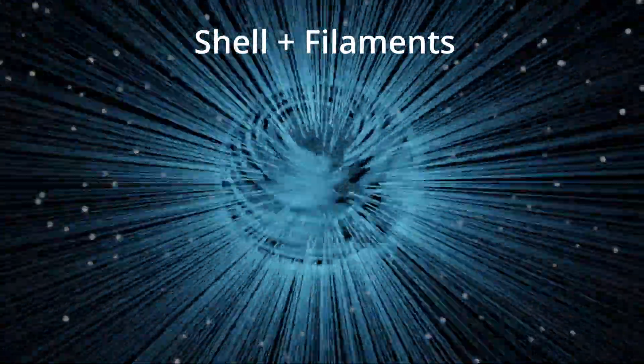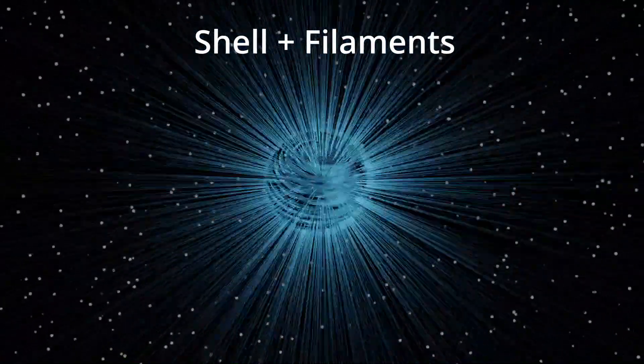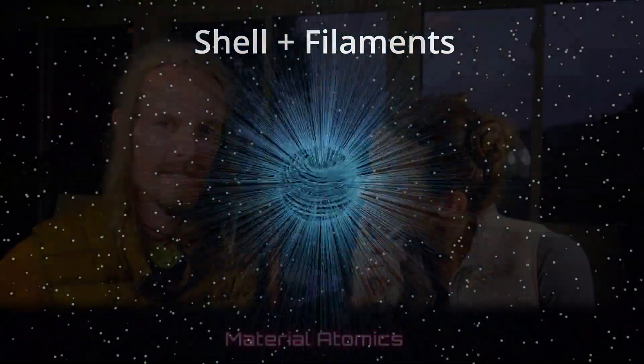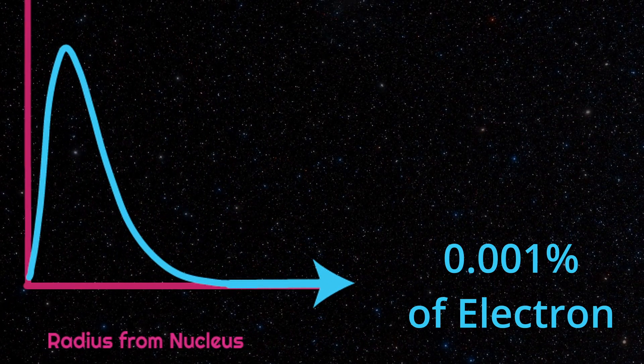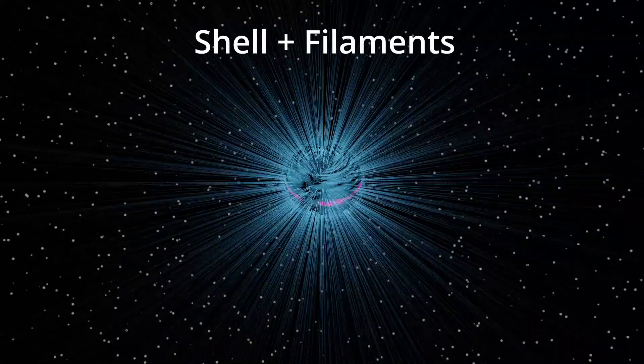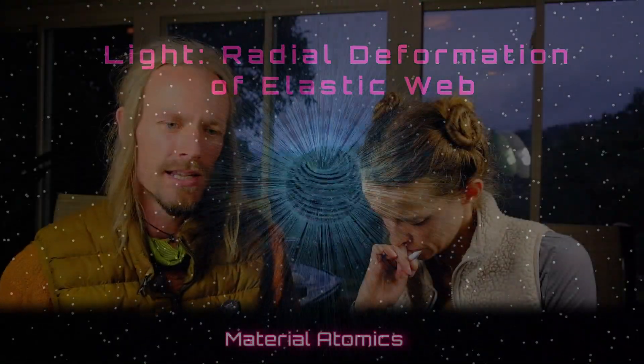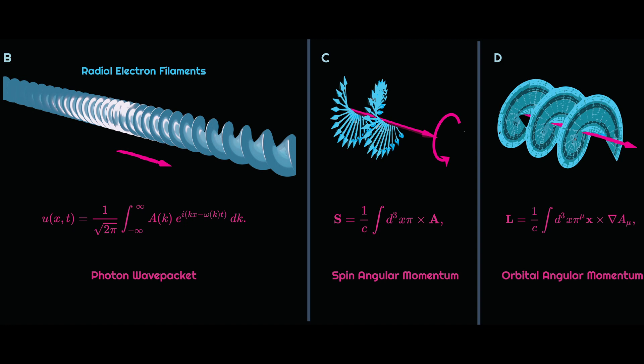Let's start with what light is — a quick recap. We have a model called the radial elastic model of the atom. Essentially we're interpreting quantum mechanics and saying the atom appears to exist within a certain radius, except there seem to be small influences at a distance. We interpret these as actual physical extensions of the shell of the atom, which we call filaments. Light is essentially a deformation of those filaments. Polarization tells us that light has an angular momentum which is either right-handed or left-handed — something is being twisted; the filament extension struts from the surface of the atom are being twisted one way or the other.